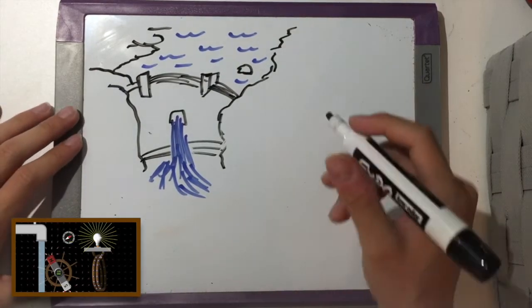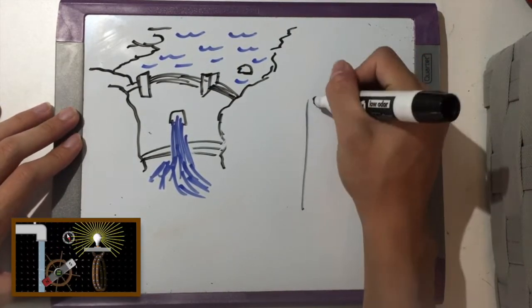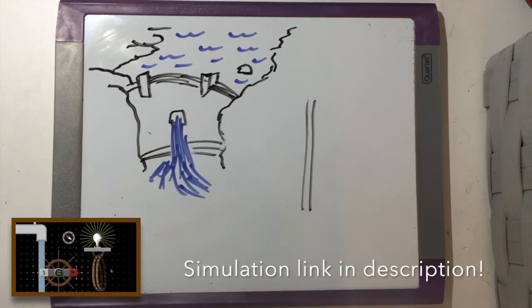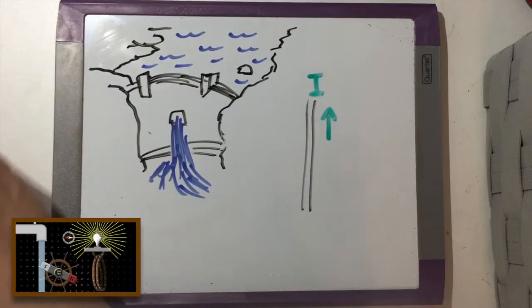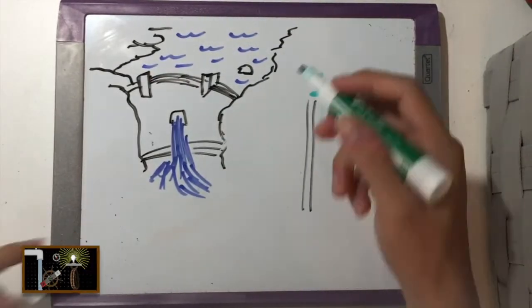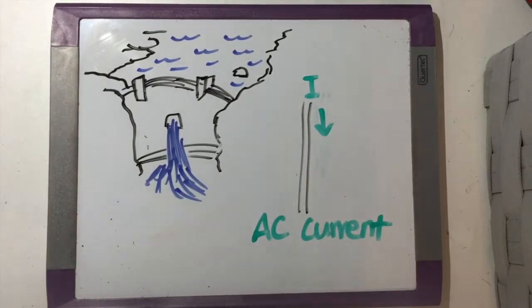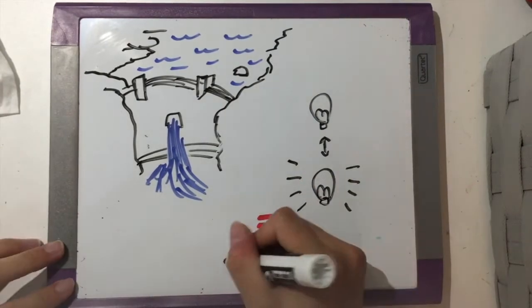We call it an AC current, which stands for alternating current. And AC currents power nearly any appliance you can think of. Realistically, the direction of the current changes so fast that we don't even see the light bulb flicker, we just perceive it as a constant light source.